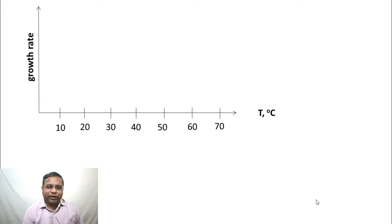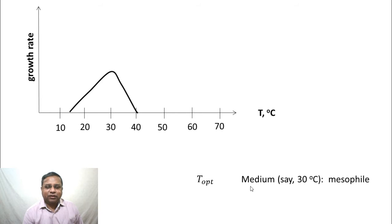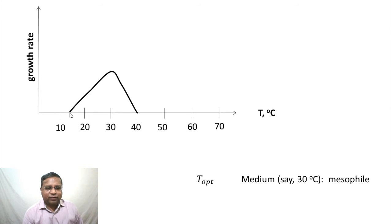Looking again at the variation in growth rate with temperature: if T-optimum is medium, around 30°C — meaning the curve starts around 15°C, reaches an optimum at 30°C, then falls, with growth not possible after about 40°C — then the organism is called a mesophile.